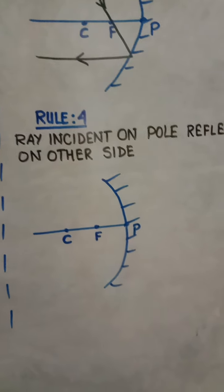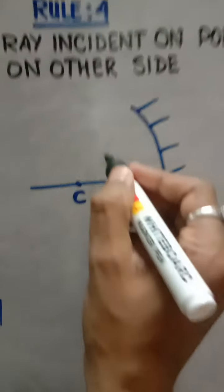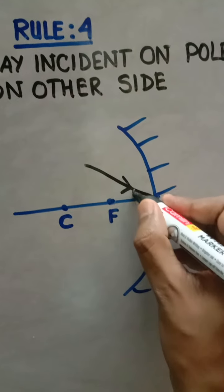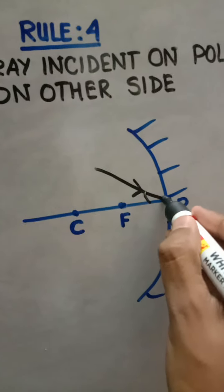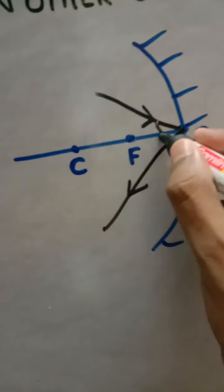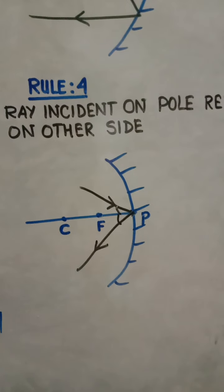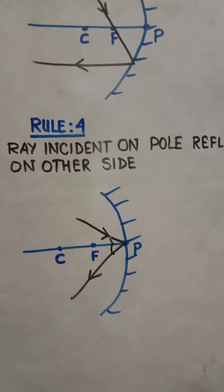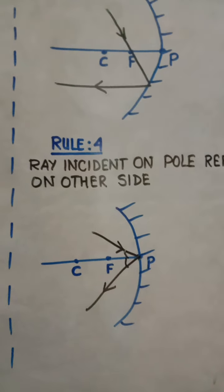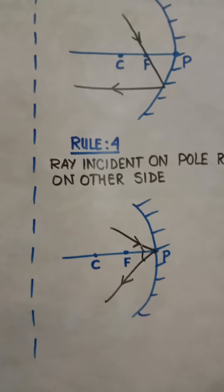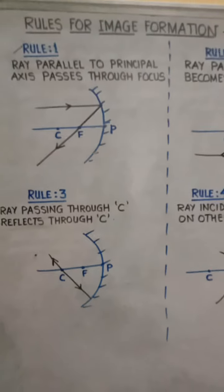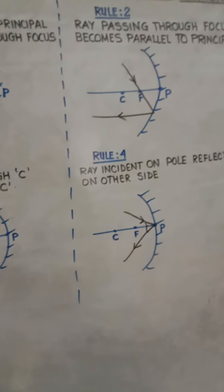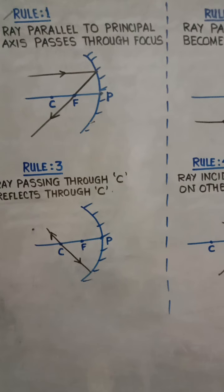Rule number four states that if an incident ray of light is striking the pole of the mirror and creates a particular angle of incidence, after hitting the mirror it will get reflected on the other side creating the same angle. So a ray incident on the pole reflects at the same angle on the other side. Use these four rules properly for image formation in concave mirrors.